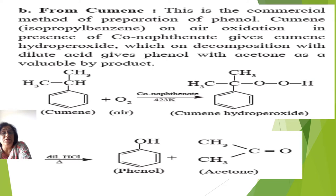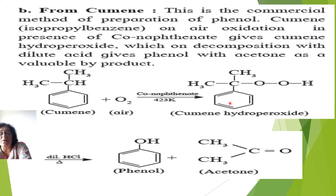The next method is preparation from cumene (isopropyl benzene) — the commercial method. Cumene is reacted with air in the presence of cobalt naphthenate at 423 Kelvin. Oxygen gets incorporated between the carbon and hydrogen of the isopropyl group to form cumene hydroperoxide. This cumene hydroperoxide, in the presence of dilute HCl and heat, gives phenol and acetone.